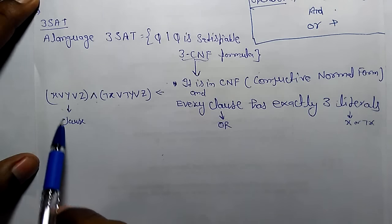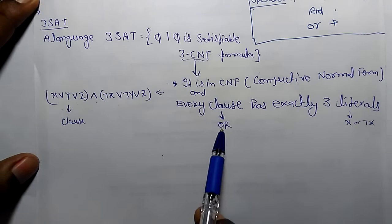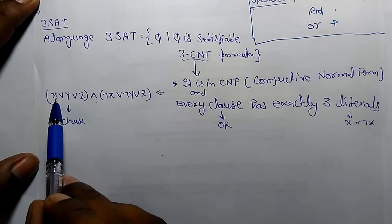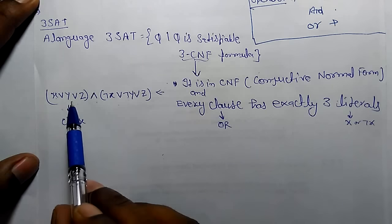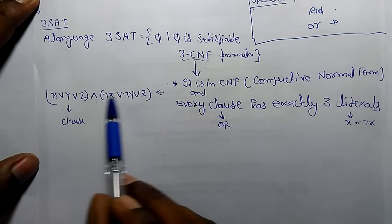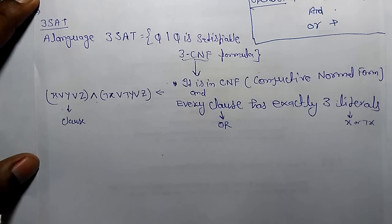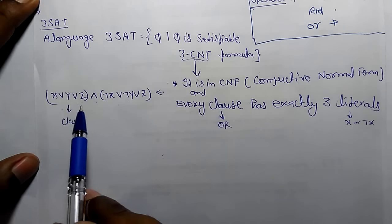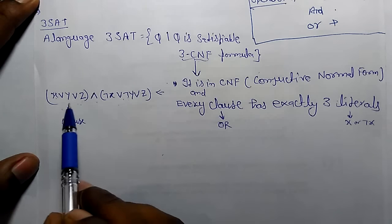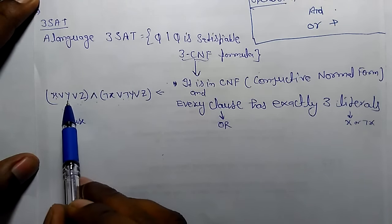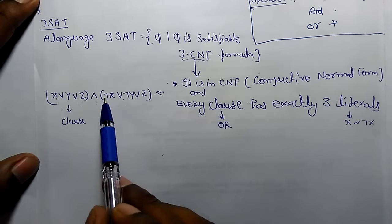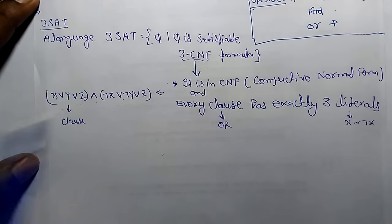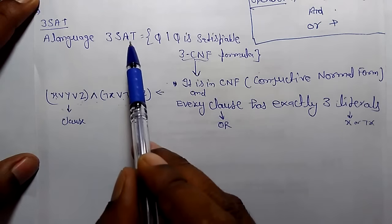The clause means an OR of literals. So X, Y, Z are literals. Here we have two clauses. Every clause has exactly three literals. For example, this clause has X, Y, and Z. This clause has NOT X, NOT Y, and Z. So a language is 3-SAT.